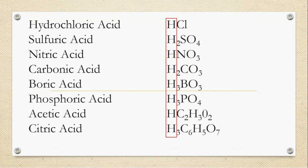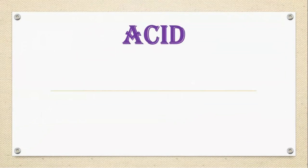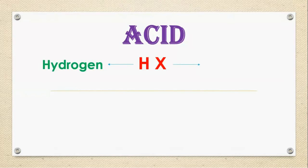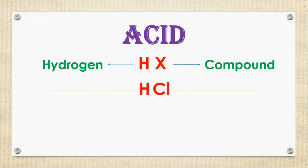whatever it may be the chemical formula, if it is starting with the letter H, that is acid. So acid, there is a common chemical formula for acid that is HX. H stands for Hydrogen and X stands for some compound. And let us compare all acid chemical formulas with this. You can see H Hydrogen, Cl is a compound chlorine, gives HCl,